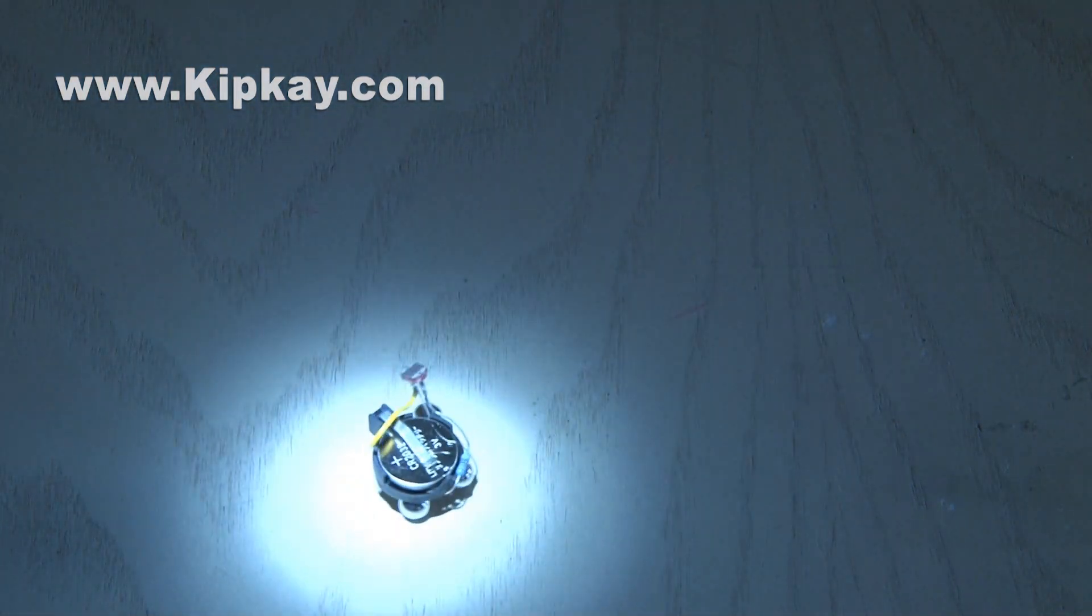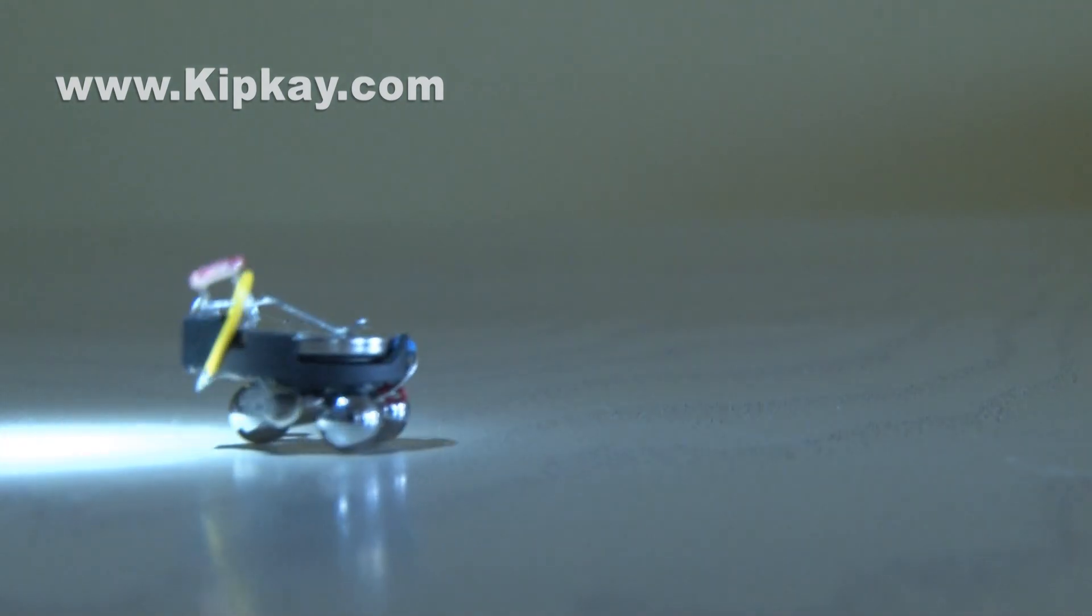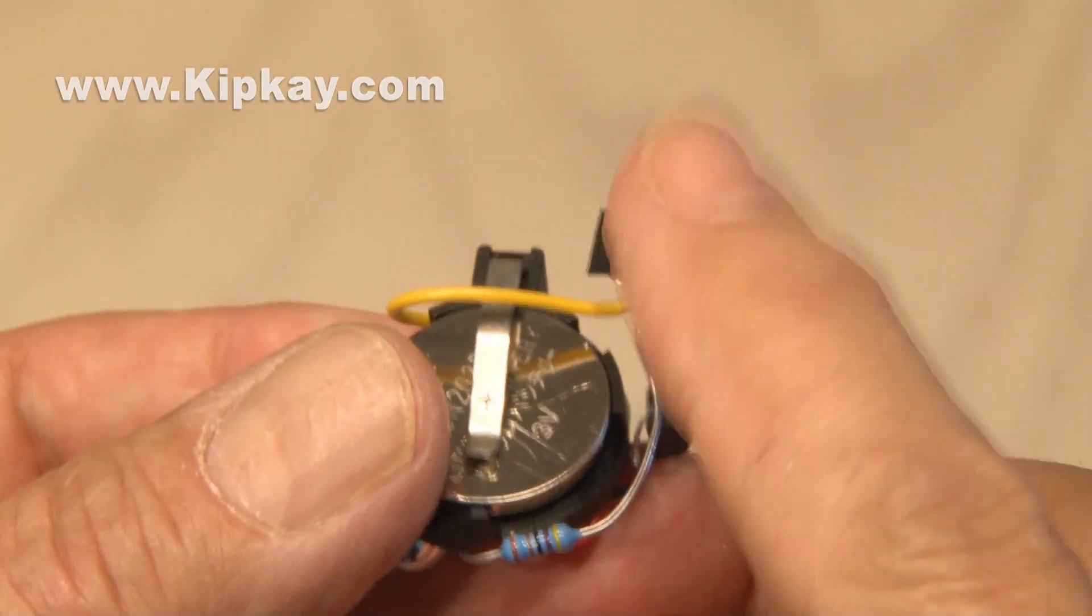You could make a couple of these and race your friends, or see who can get out of the circle of light first. And to shut it off, I just used a small piece of tape over the photo cell.